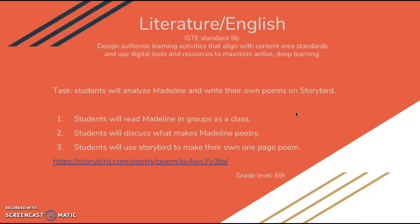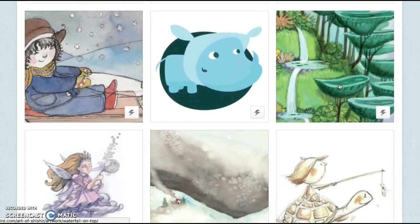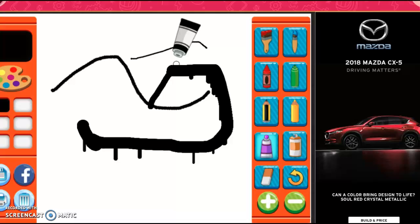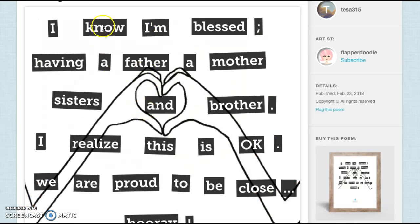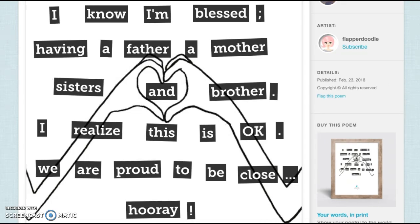Storybird is a very interesting website where you can create books and poems using pictures and themes on the website. I have been able to make my own rationale for what I would want the students to make — I just think that they should make a one-page poem and not a story. How it works is that you are given a picture that you can choose on your own, and then you are given words and you make a poem out of them. I believe that poetry is very important for students to learn, and by creating their own poems they can deepen their intellect.